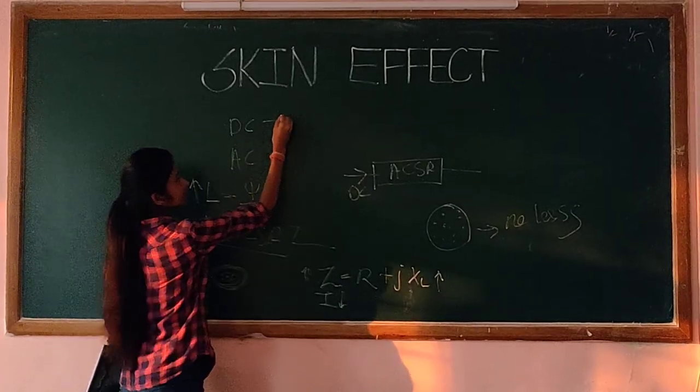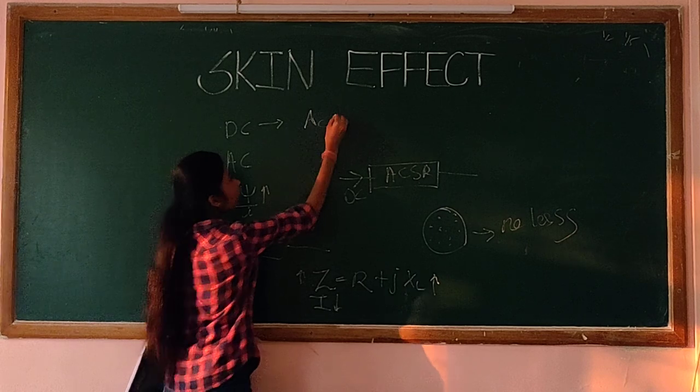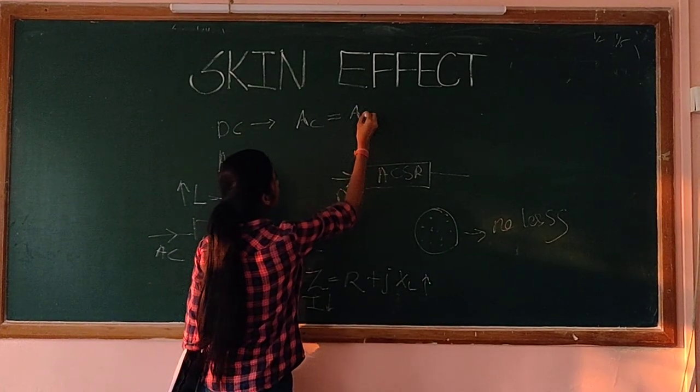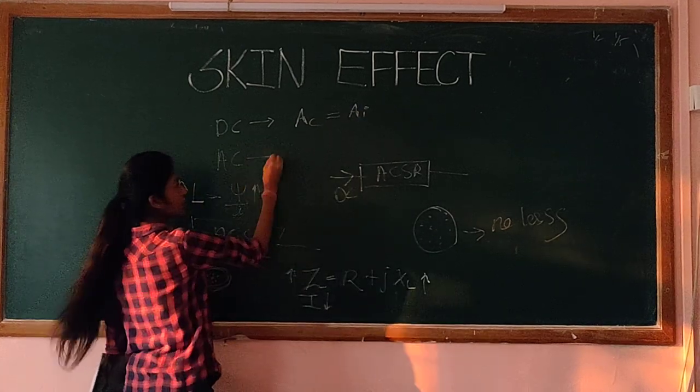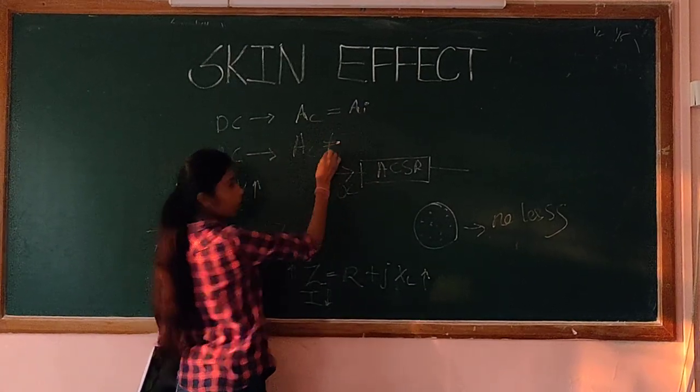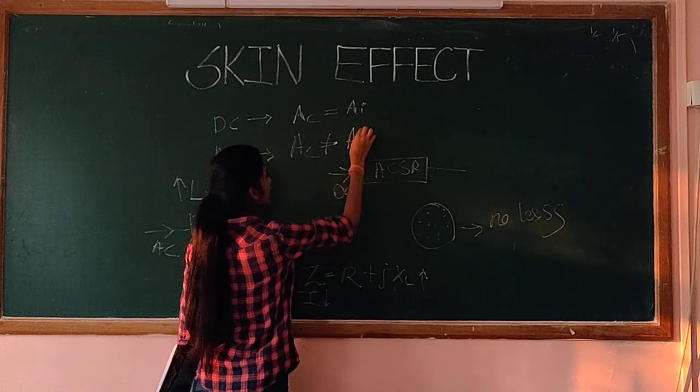In case of DC, the area of conductor is equal to area of current. But in case of AC, area of conductor is not equal to area of current.